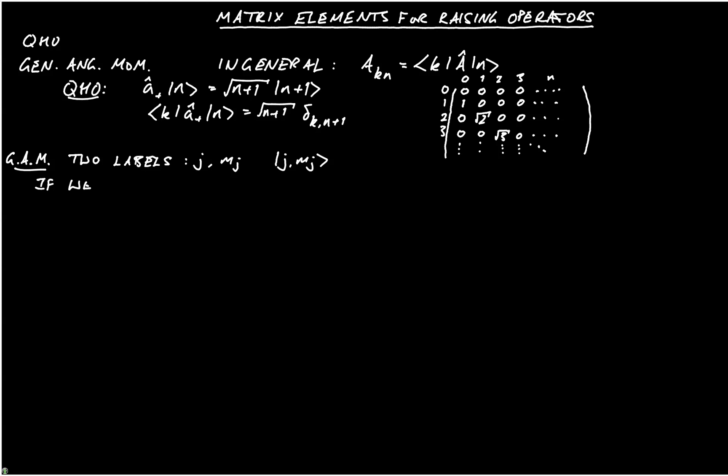So if we fixed j, let's say to 3 over 2, though remember it can be any half integer value, we would have 2j plus 1 eigenstates. And remember those are for mj is equal to minus j, etc., up to plus j. So that's where we would go, and we could, if we chose, label these in the same way that we would label the quantum harmonic oscillator, so we could label them as ket 1, ket 2, etc., up to ket 2j plus 1.